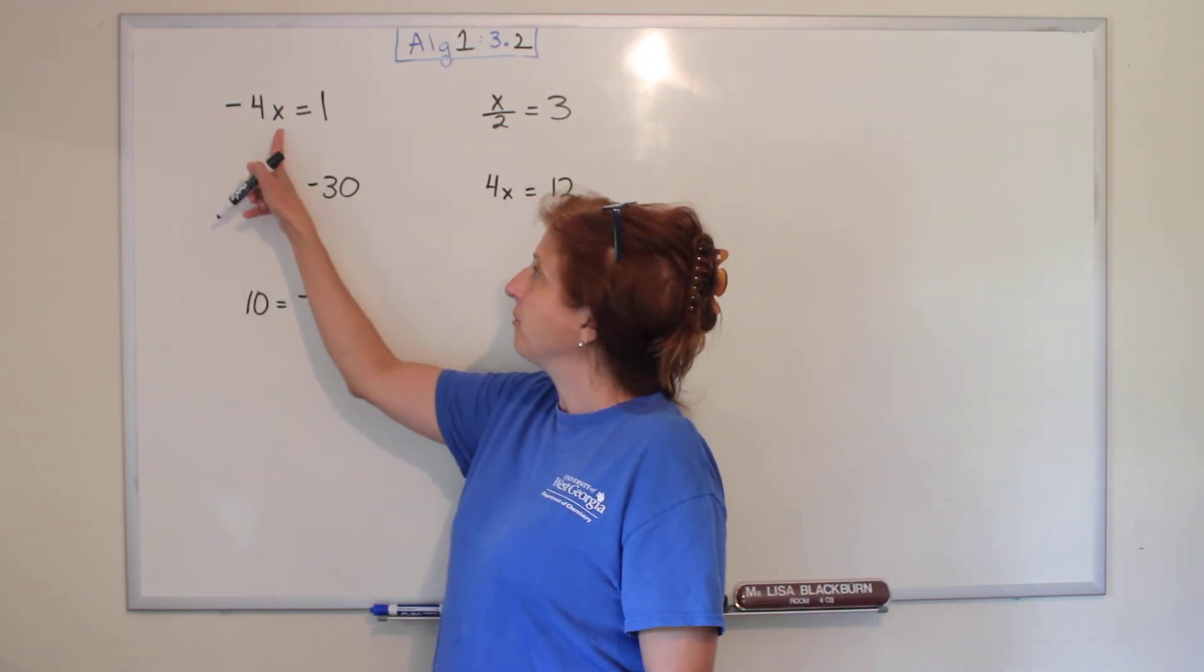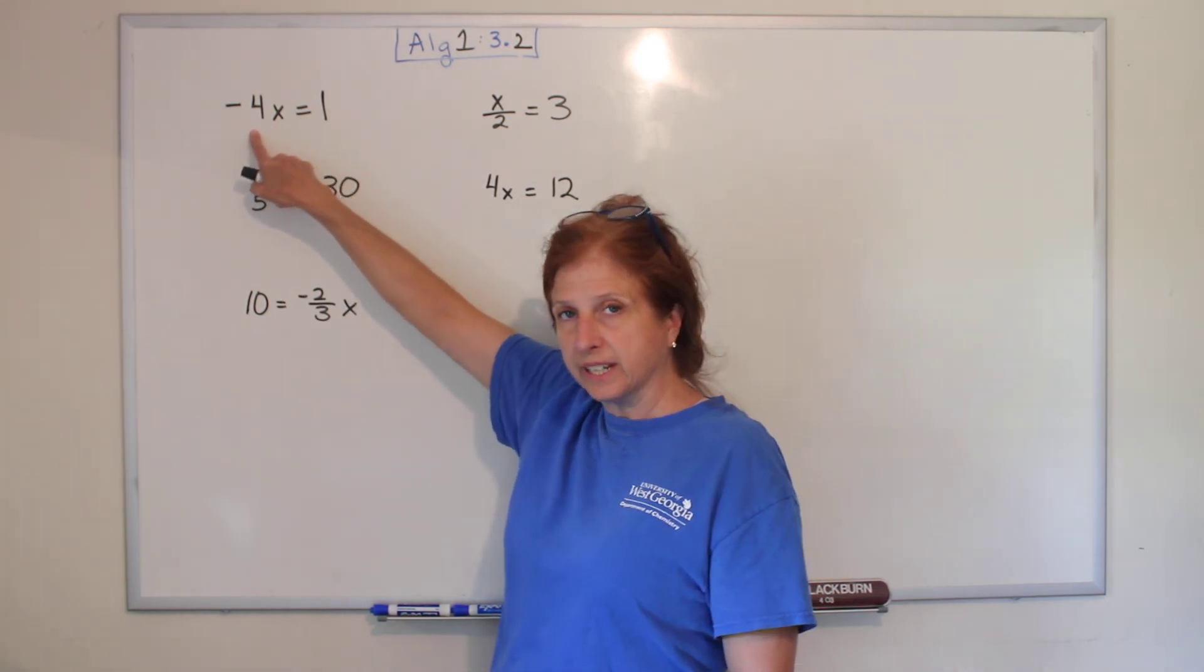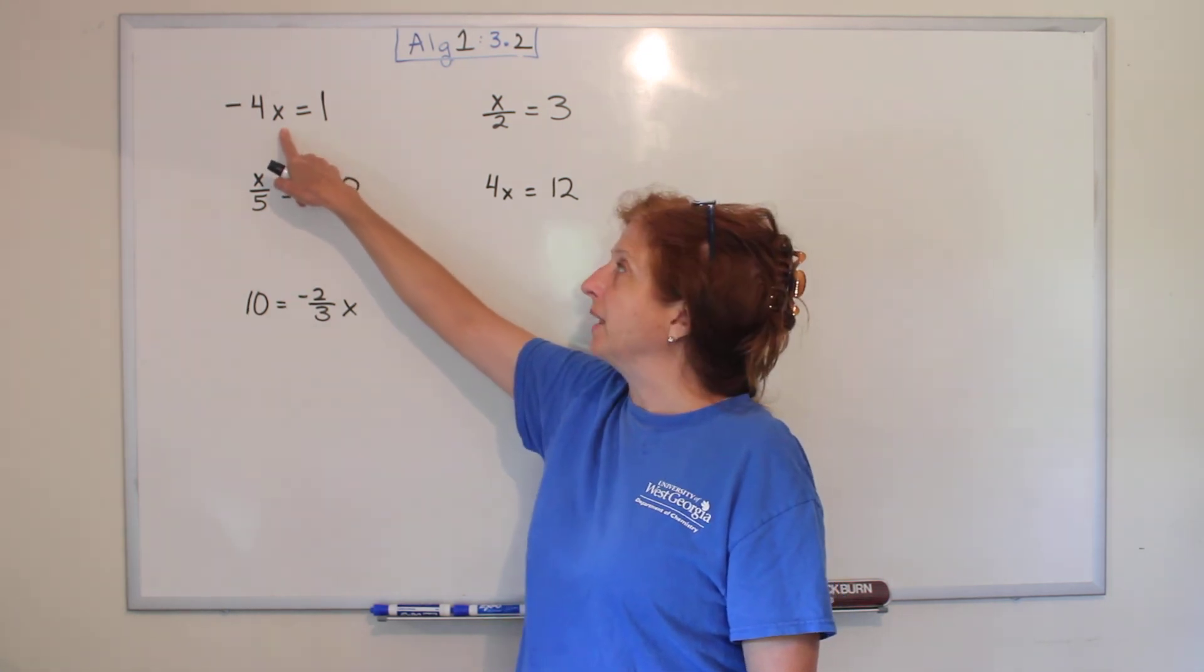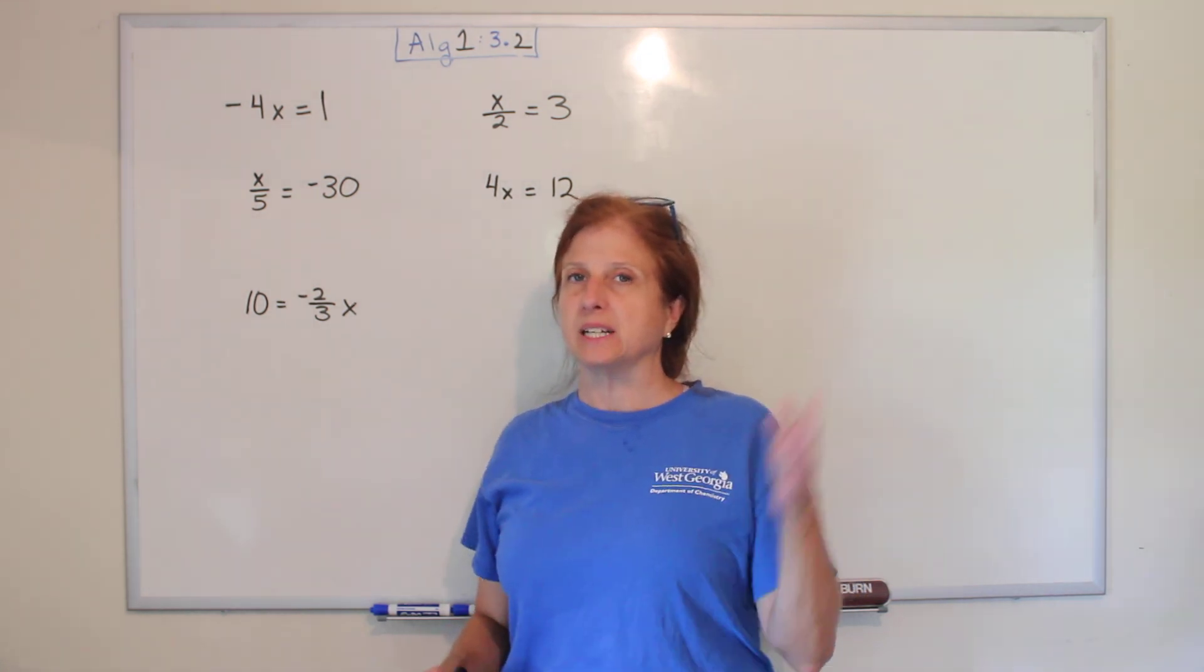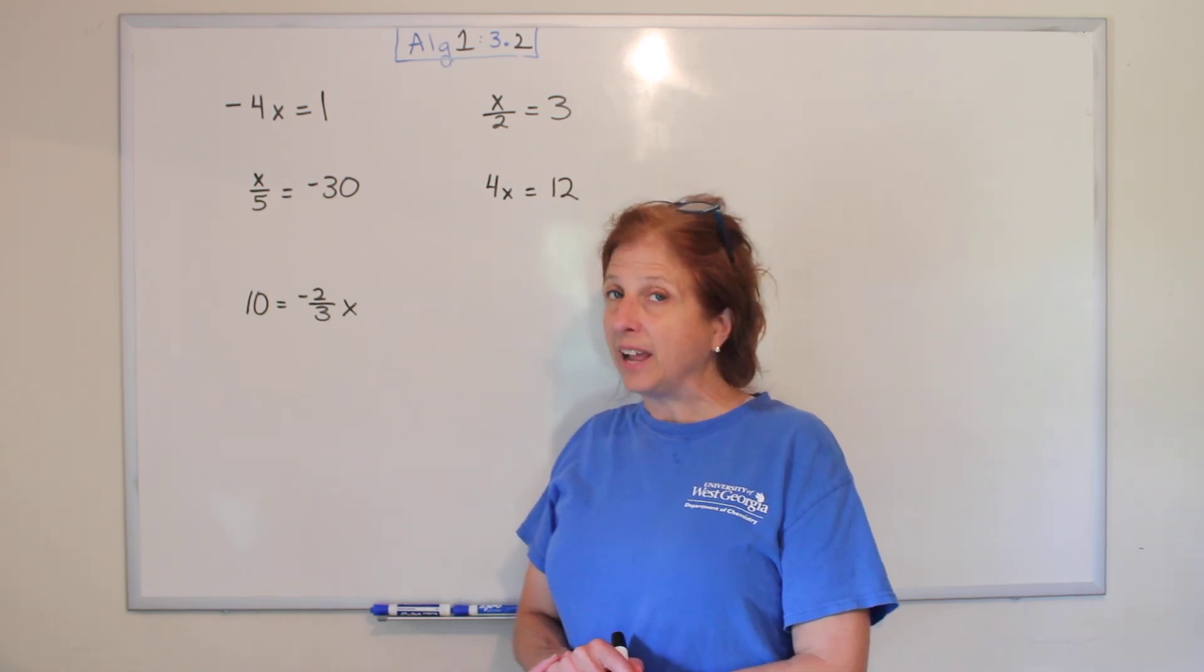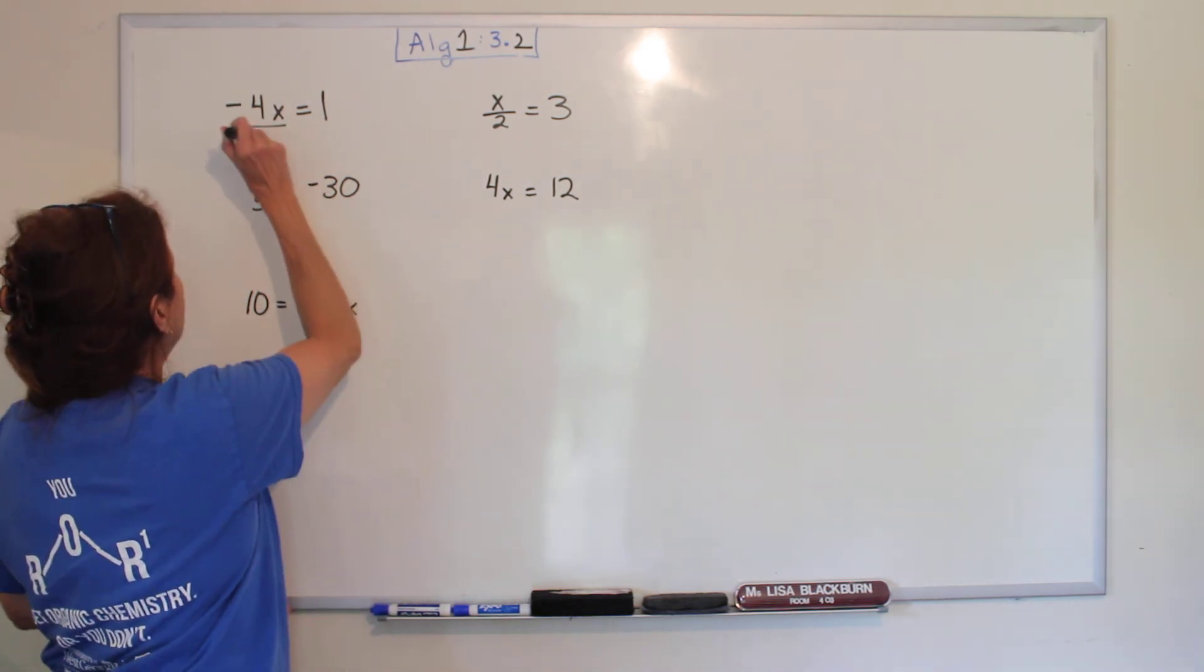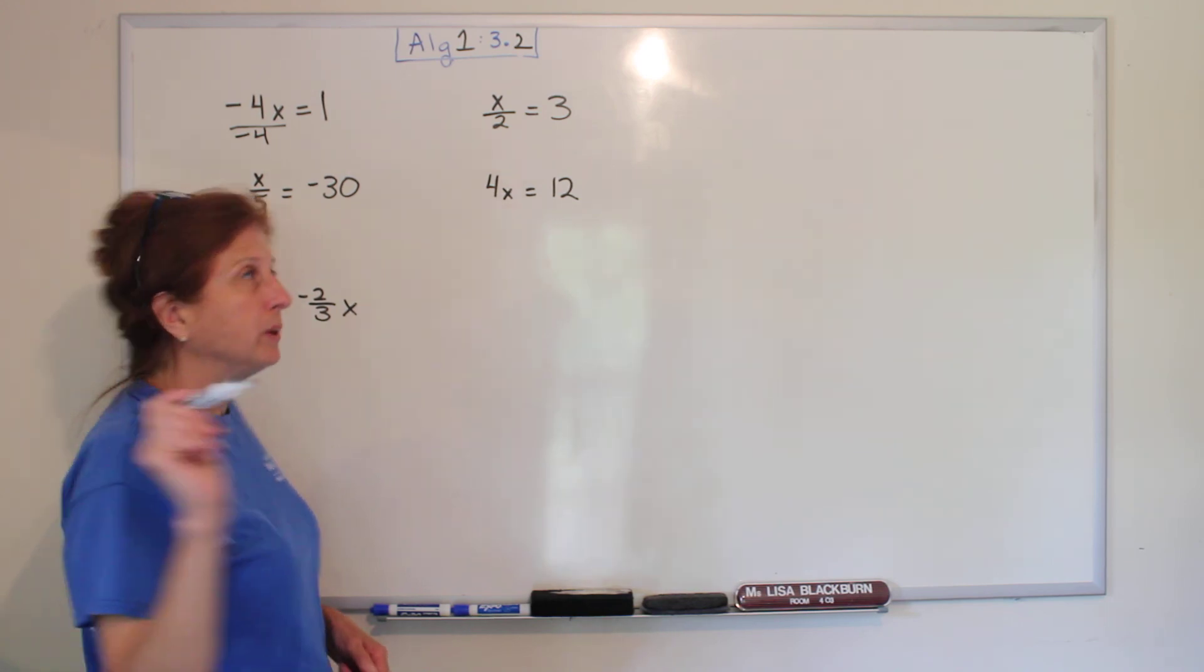Alright, so here's our first problem. Why is x not alone? Well, it's got a negative four sitting next to it. If a number is sitting next to a letter in algebra, it means they're being multiplied. So it's being multiplied by negative four. What do you think the opposite of multiplying by negative four is? Dividing by negative four. So how we show division is the fraction bar. We're going to divide by negative four. And what we do to one side, we do to the other.